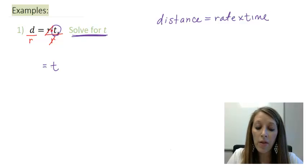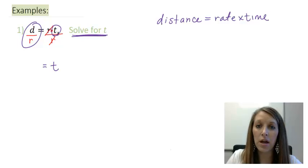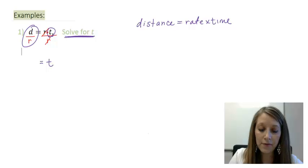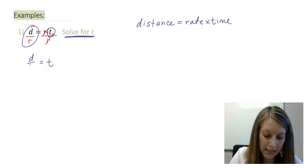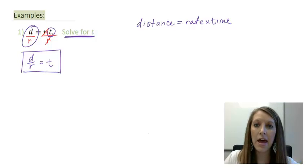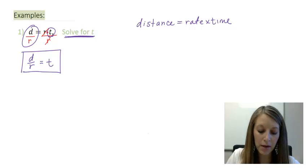Now, on the left, I cannot do anything with this here. I cannot simplify it in any sort of way. So all I have to do is copy it down as is. So I have my t isolated, meaning I have solved for my t variable. This means if I want to figure out how much time it took me to get there, I take my total distance and divide it by my rate.